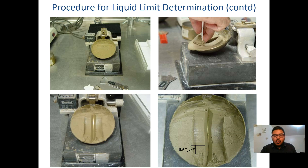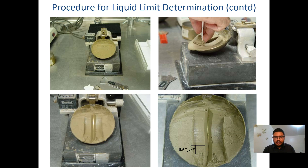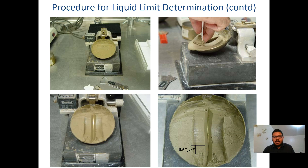After that, we will start blowing the Casagrande device. While cutting the groove, the soil paste is divided into two parts. When we start blowing the apparatus, the energy causes the two parts to try to merge together. We have to stop blowing when the two parts of the sample merge by around 0.5 inch or 12.5 mm. We count how many blows are required to achieve that 0.5-inch merge.